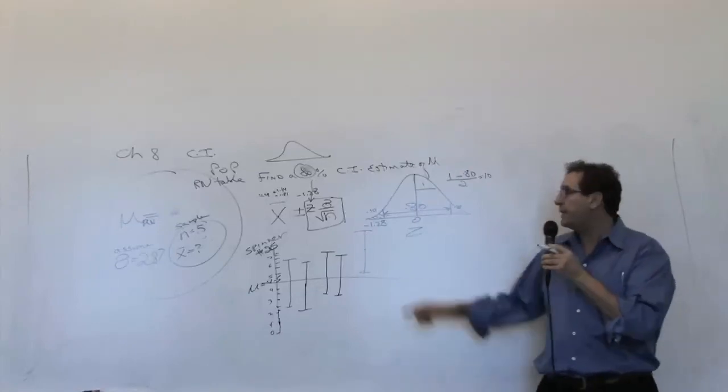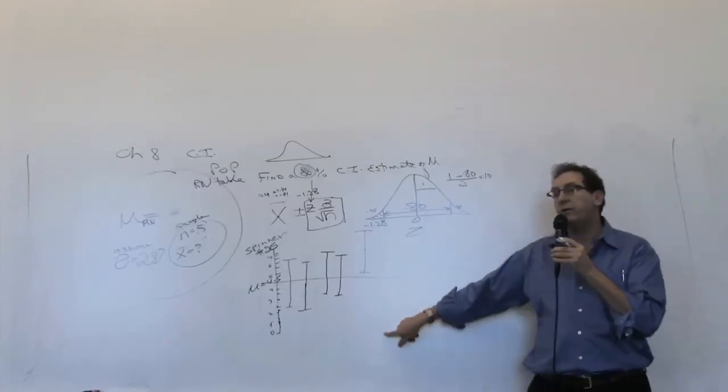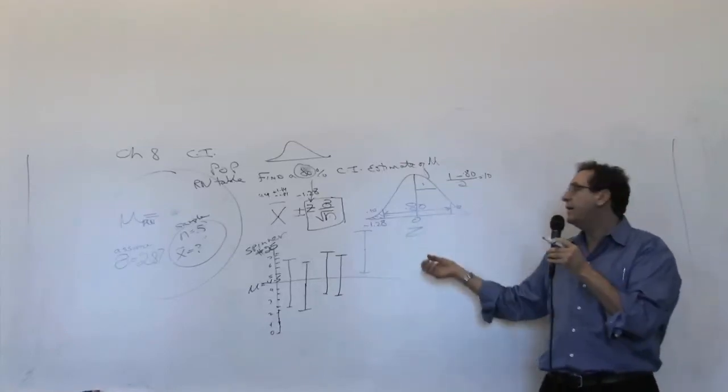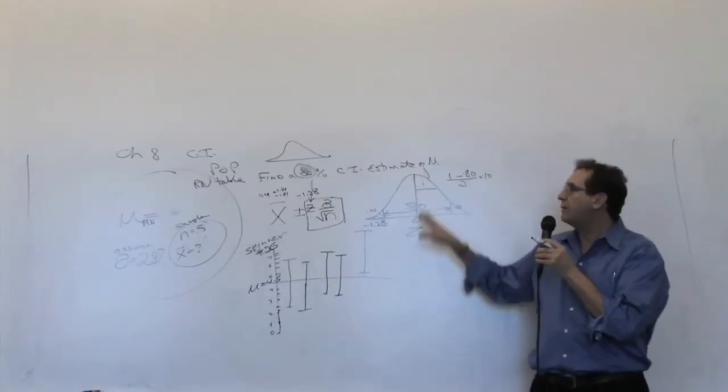If we get 10 people cooperating, you're going to get eight people getting it right and two people getting it wrong. If we had 100 people doing it, 80 will get it right and 20 will get it wrong. Now does it mean exactly 80 out of 100? No, you may get 82, you may get 79, but the theory is saying that that's what it means.